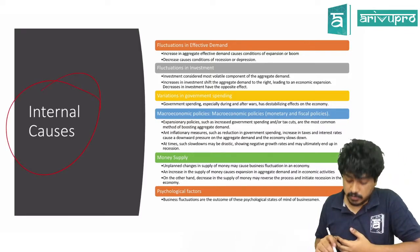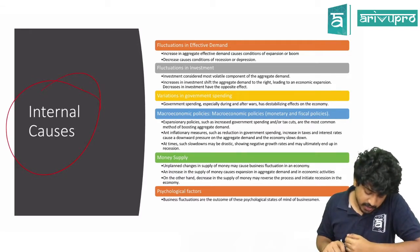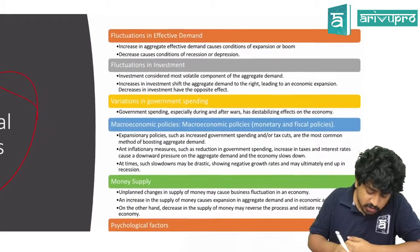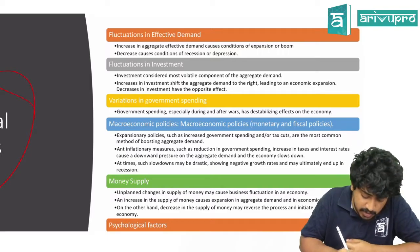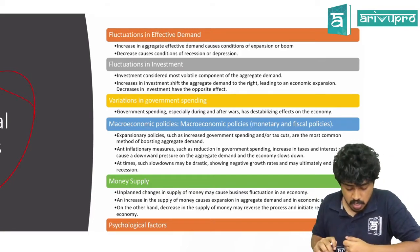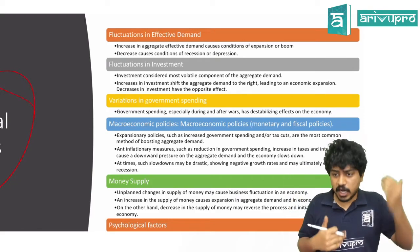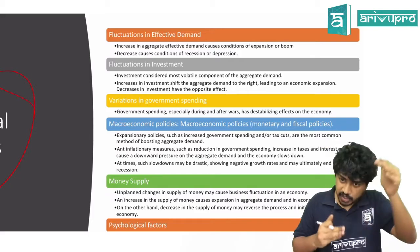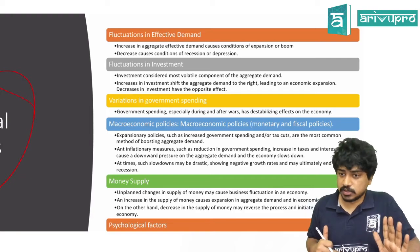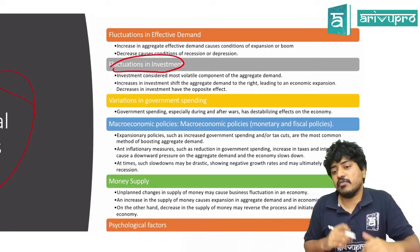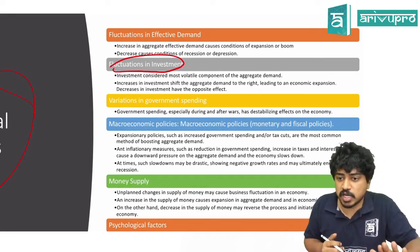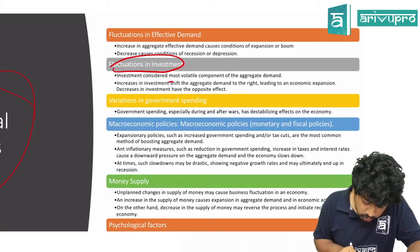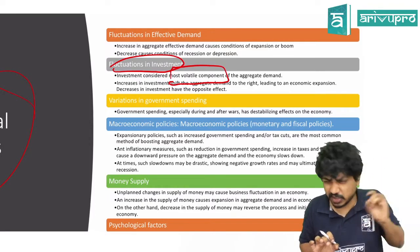Causes of business cycle — two types: internal and external. Internal causes: fluctuation in effective demand — increase in aggregate effective demand causes expansion and boom; decrease causes recession and depression. Fluctuation in investment — if more investments are coming, more people will spend; lesser investments means less spending. Investment is considered the most volatile component of aggregate demand.